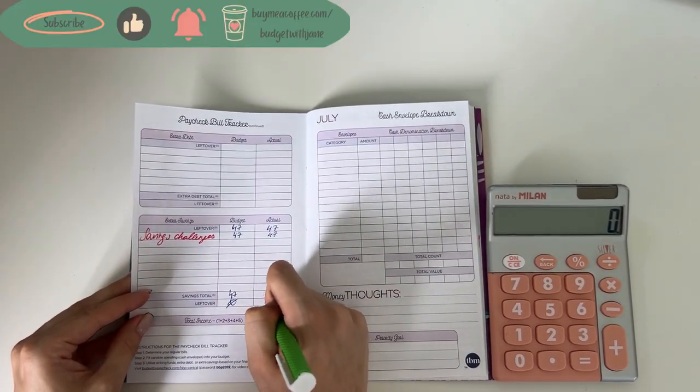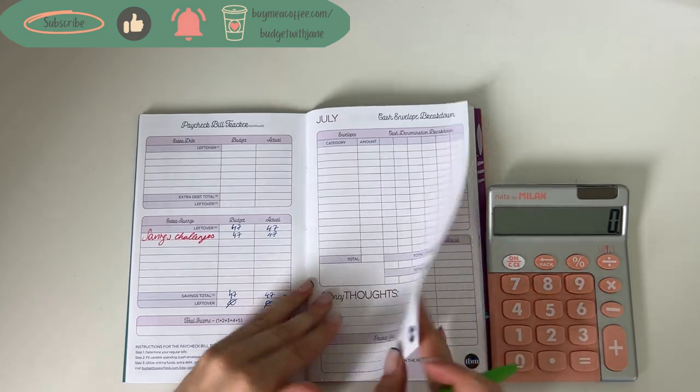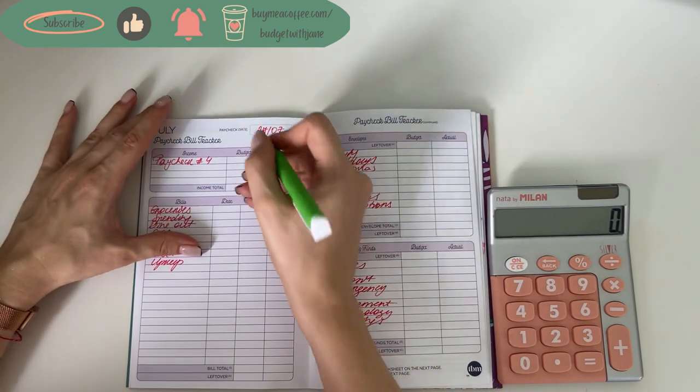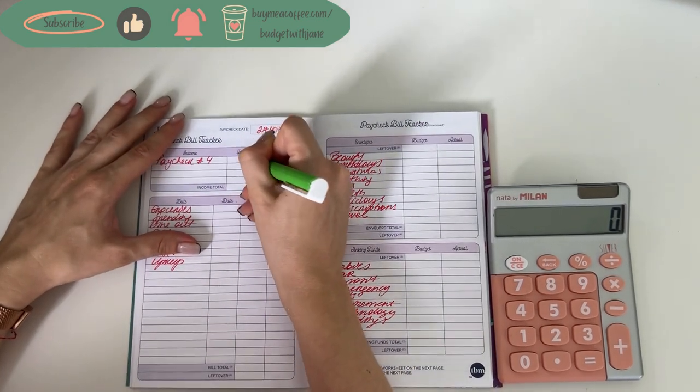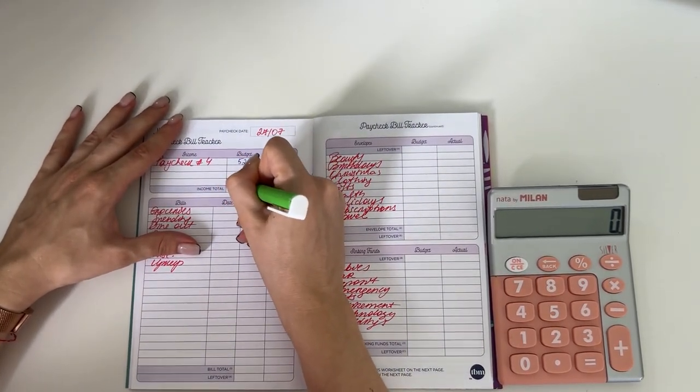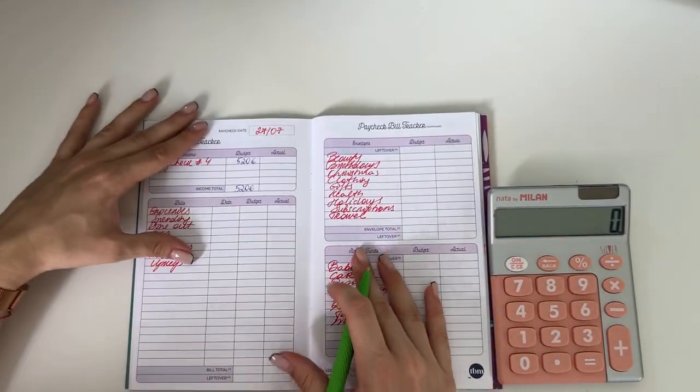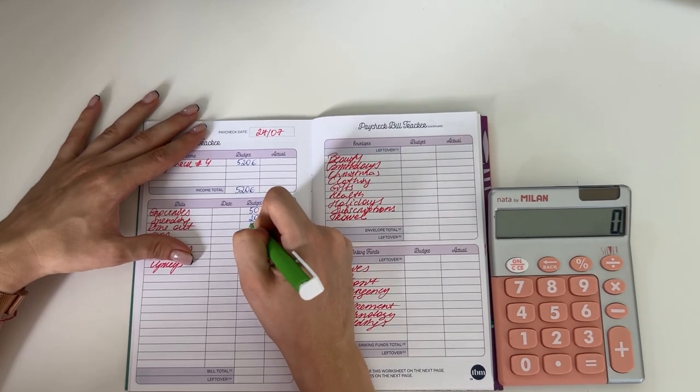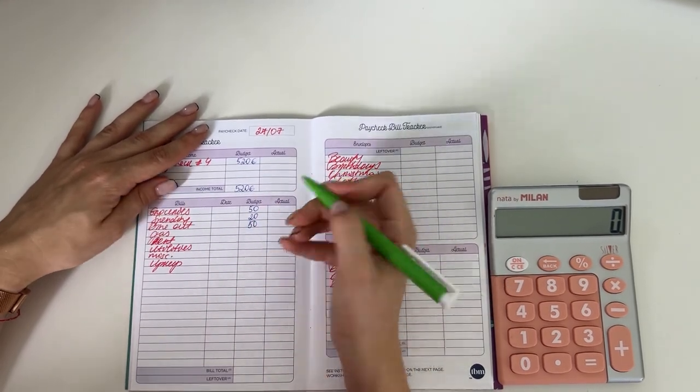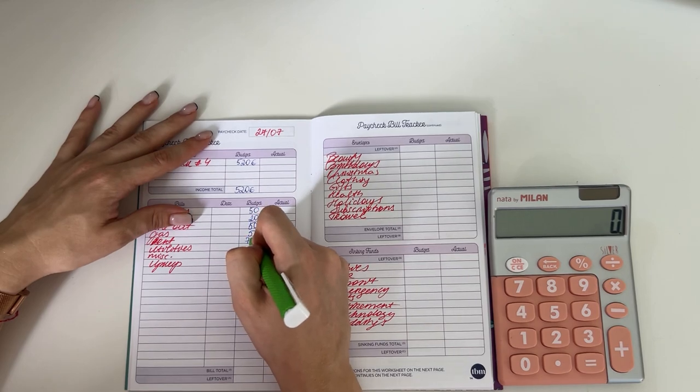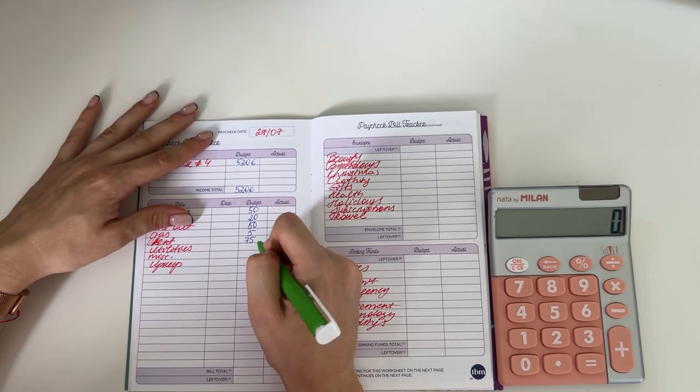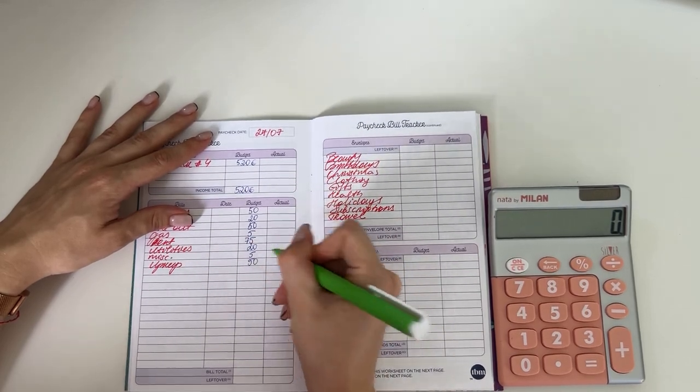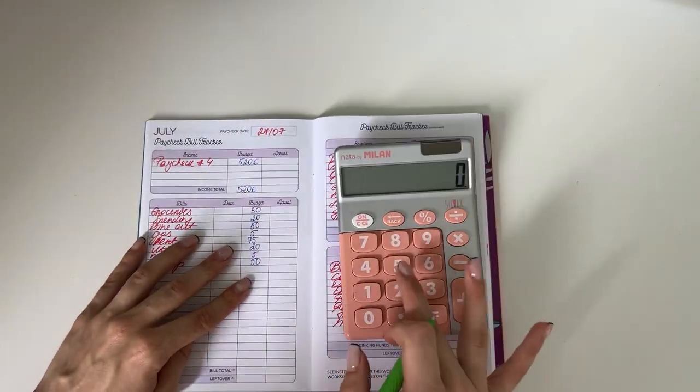This week none of the amounts really changed. Now let's set up our next week's budget. This is going to be interesting because we have 520 euros to work with this week. As usual we're putting 50 into groceries, 20 into spending, 50 in dine out, 5 into gas, 75 into rent, 25 into utilities, 25 into miscellaneous, and 50 in one month ahead. In total that is 275 euros.